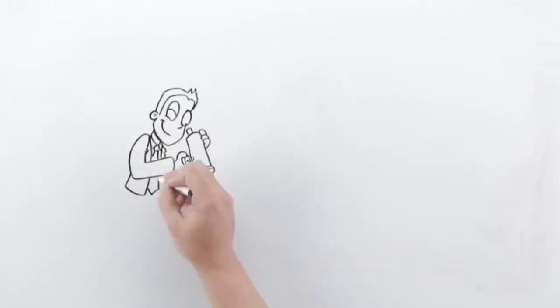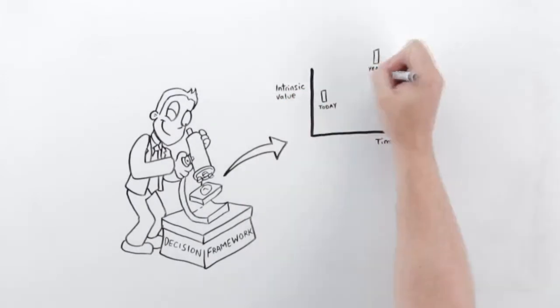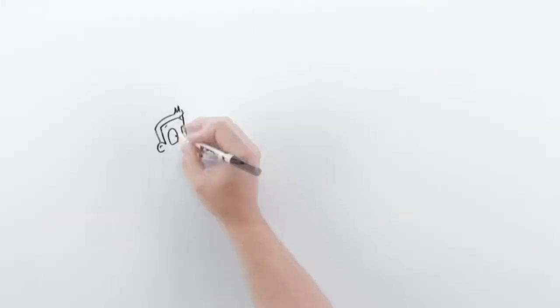So when DGI's idea generation identifies an opportunity and we're able to properly assess the intrinsic value of the company, the capital allocation decision framework becomes easier.